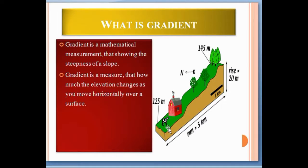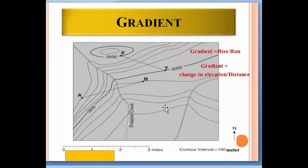Now see here, this is the topographic map and index contours are given. This is the contour of 3500 and this is the contour of 3000. Now suppose we want to hike from point Y to point X. The contour interval is 100 meters. I have already made a video on how to calculate contour intervals, so you can see that video.